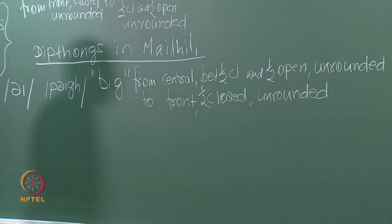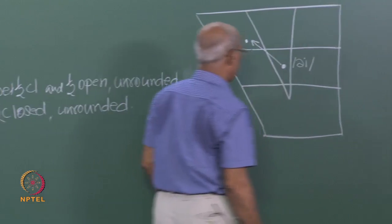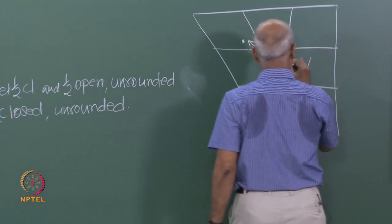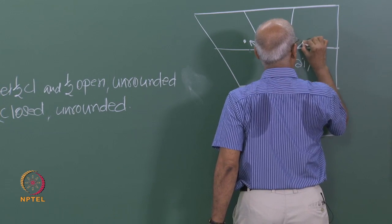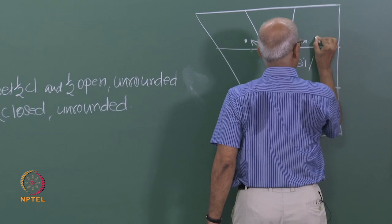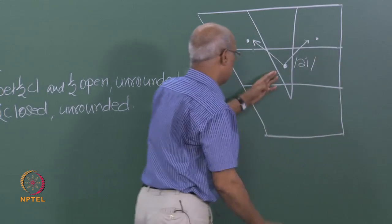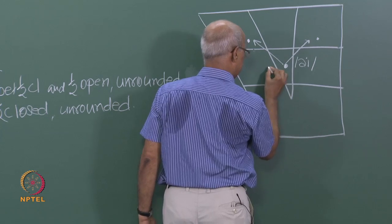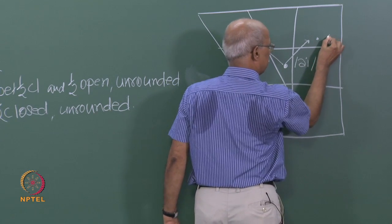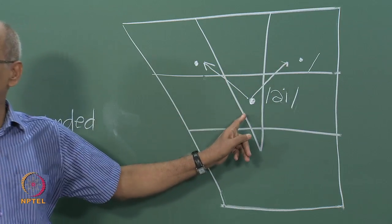We have another diphthong in my mother tongue, in Maithili. This will be represented somehow in this manner — it moves from here to here. Can you give me the symbol for this? If the diphthong moves from here to here, what will be the symbol?